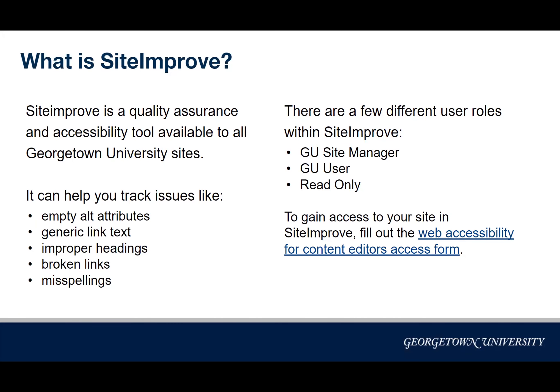So let's first talk about what Siteimprove is. Siteimprove is a quality assurance and accessibility tool that we have available for all Georgetown University sites. The quality assurance part tracks issues like content quality, content freshness, and user experience, and the accessibility part can help us make sure our sites are in compliance with the web content accessibility guidelines.